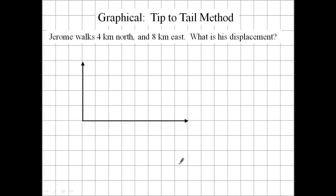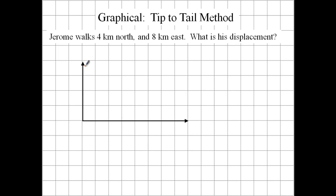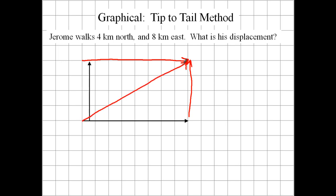Alright, the tip-to-tail method. Same thing, except instead of drawing a parallelogram, we're just moving this whole vector so its tail winds up at the tip of this one. We could have also moved the other one instead — slide the bottom one up. And our resultant is going to connect the start to the end. So we can either move the 4 kilometers north or the 8 kilometers east, and we get another right triangle. Same answer as last time.